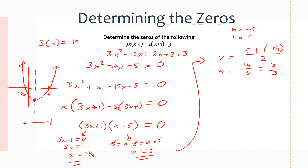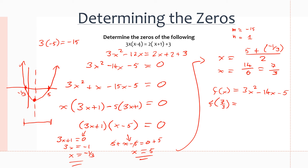Now if we want to find the y-value of our vertex, we simply substitute x equals 7 over 3 into our standard form equation f(x) equals 3x squared minus 14x minus 5. Plugging in 7 over 3, we get 3 times (7 over 3) squared minus 14 times (7 over 3) minus 5, which gives 3 times 49 over 9 minus 98 over 3 minus 5.